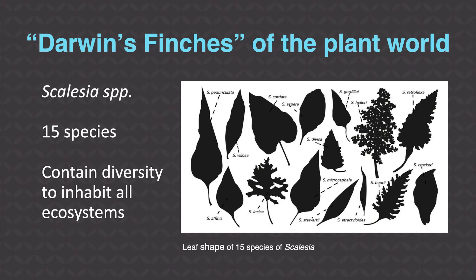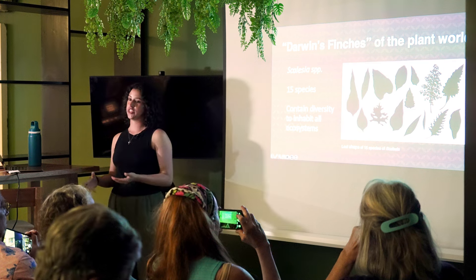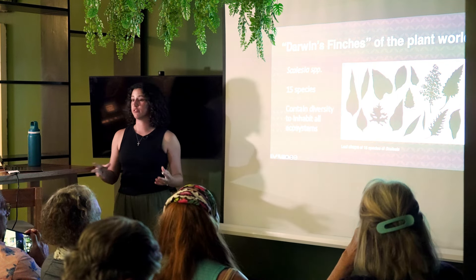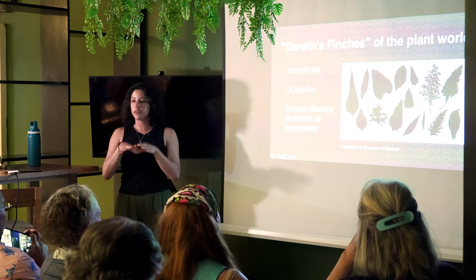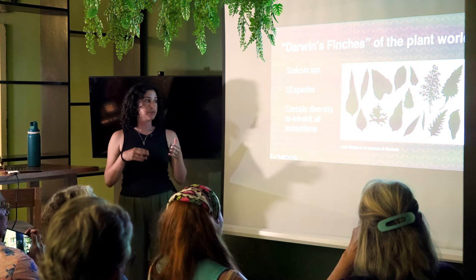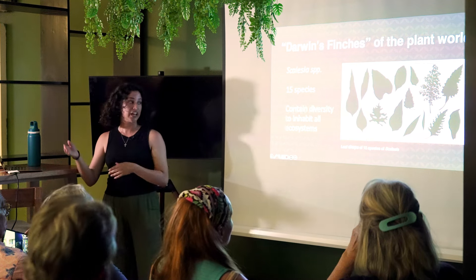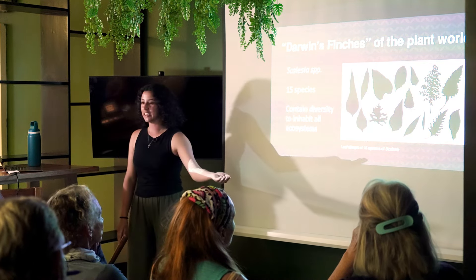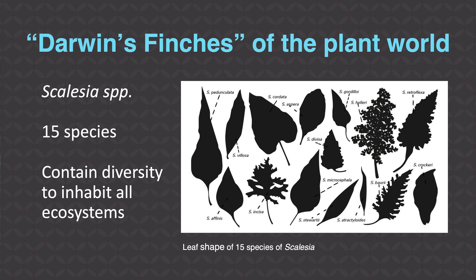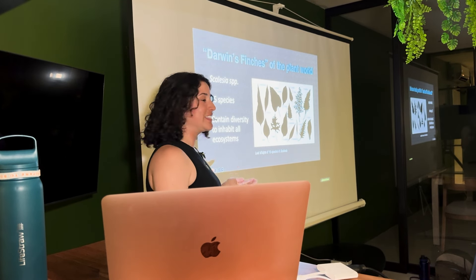Scalesia are known as Darwin's finches of the plant world. Just like finches showed adaptive radiation — diversifying into multiple ecological niches and exhibiting wide variety — Scalesia shows the same. All 15 species of Scalesia each have very unique leaves. Scalesia can also inhabit multiple ecosystems: in the highlands it grows to a very tall tree, but in the lowlands it can be found as a small shrub. It's remarkable how Scalesia has inhabited multiple areas and exhibited a wide variety.